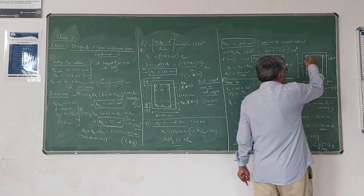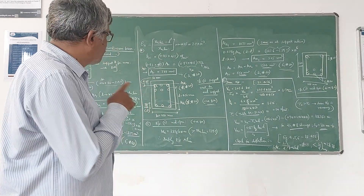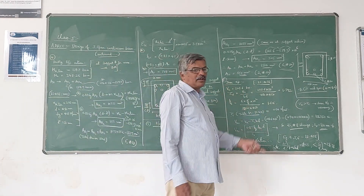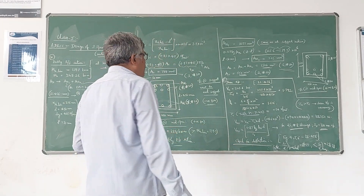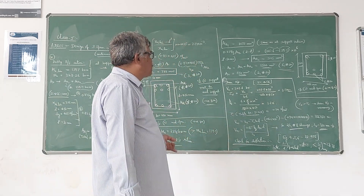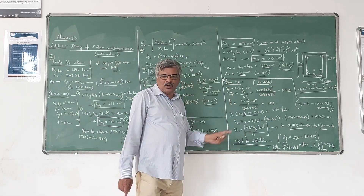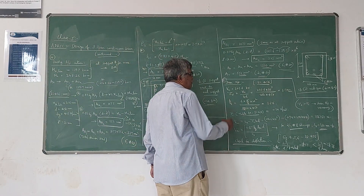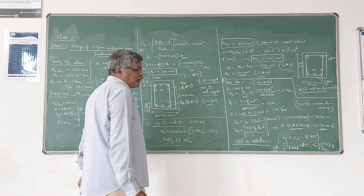At the support, there is more moment; at mid-span, there is lesser moment. The nature is also different — negative at supports and positive at mid-span. Now the last step is to calculate and design the shear reinforcement. For that, as per IS 456, we have to calculate the nominal shear stress TOW_V = VU / (b × d). The maximum shear force VU is 291.6 kN obtained using shear force coefficients from IS 456.